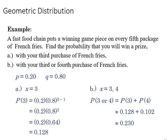This example shows where the geometric distribution could work. A fast-food restaurant puts a winning game piece in every fifth package of french fries. Find the probability you win a prize: A, with your third purchase, or B, with your third or fourth purchase of french fries. The probability is one out of five, or 0.20. Q is the complement of that to give us a total of one.